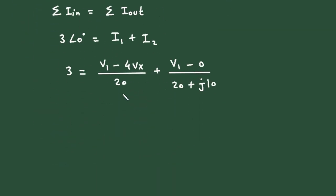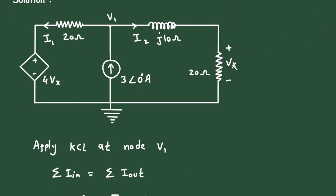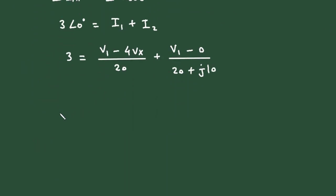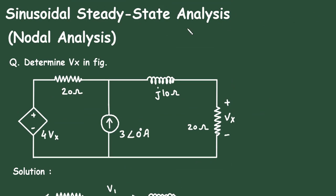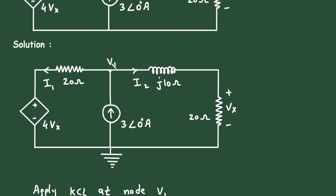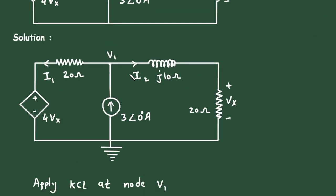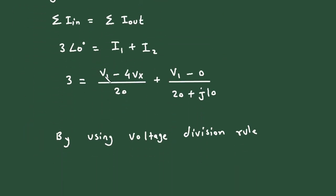Now let us simplify. Here we can see V1 and Vx — there are two unknowns. So we can find the value of Vx by using the voltage division rule. We will directly change V1 into the form of Vx, which will make it simpler.